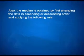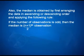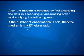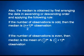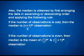The median is obtained by first arranging the data in ascending or descending order and applying the following rule. If the number of observations is odd, then the median is the ((n+1)/2)th observation. If the number of observations is even, then the median is the mean of the (n/2)th and the (n/2 + 1)th observation.